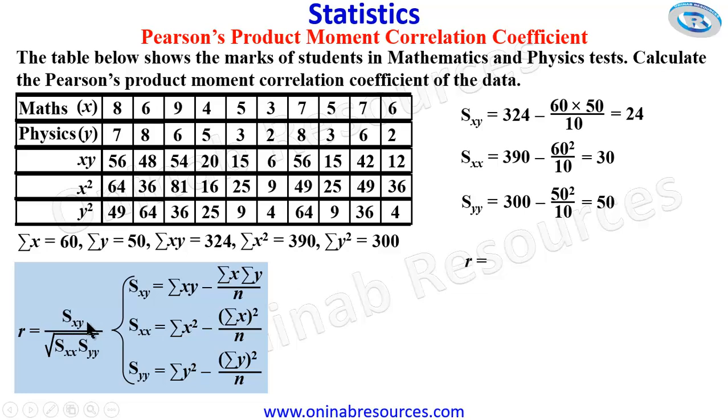S_XY is 24 over square root of S_XX, S_XX is 30 times S_YY, which is 50.